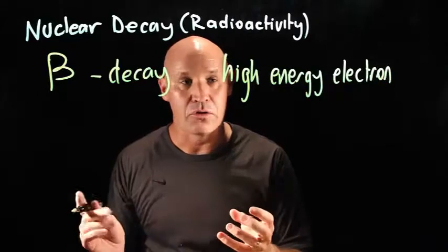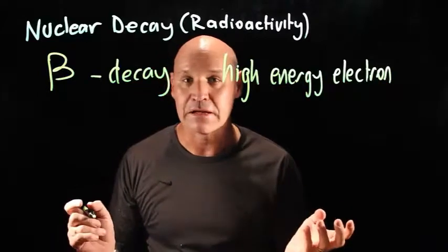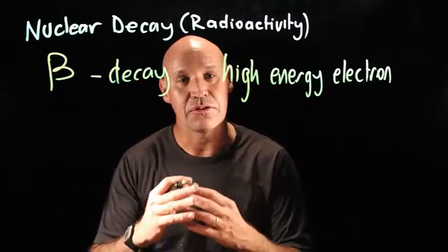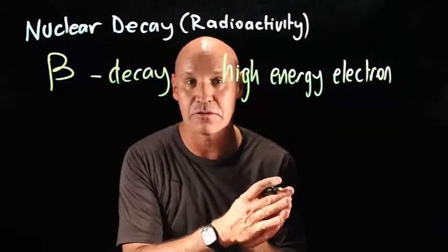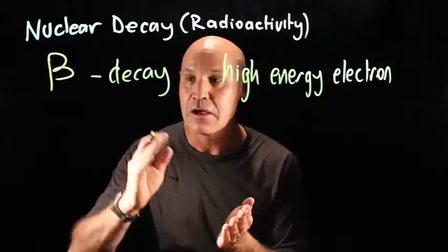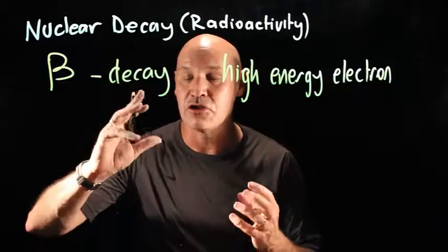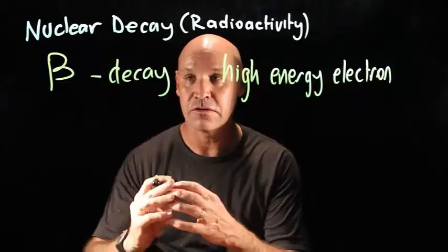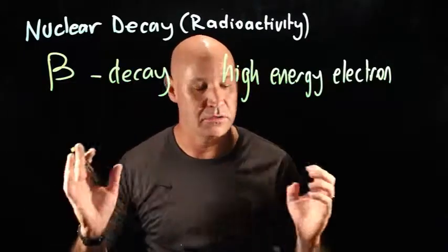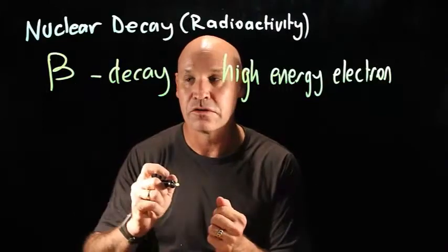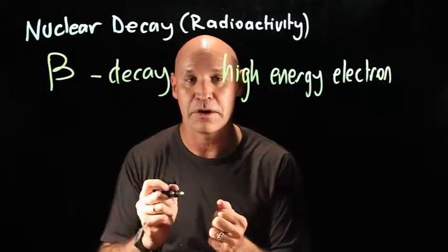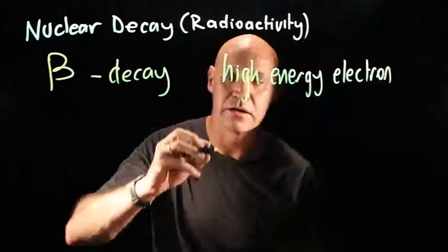So what that means is that the atomic number increases by 1. When a nucleus undergoes beta decay, the number of protons increases by 1.